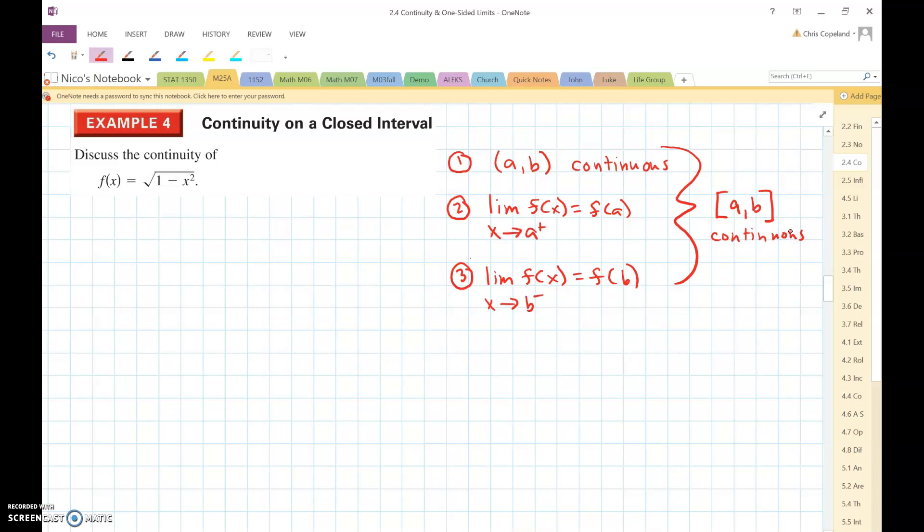Okay, so let's look at this function. So first of all, if we look at this function, the square root of one minus x squared, think about the domain of this function. The domain of this function, what's underneath the square root, that would have to be greater than or equal to zero.